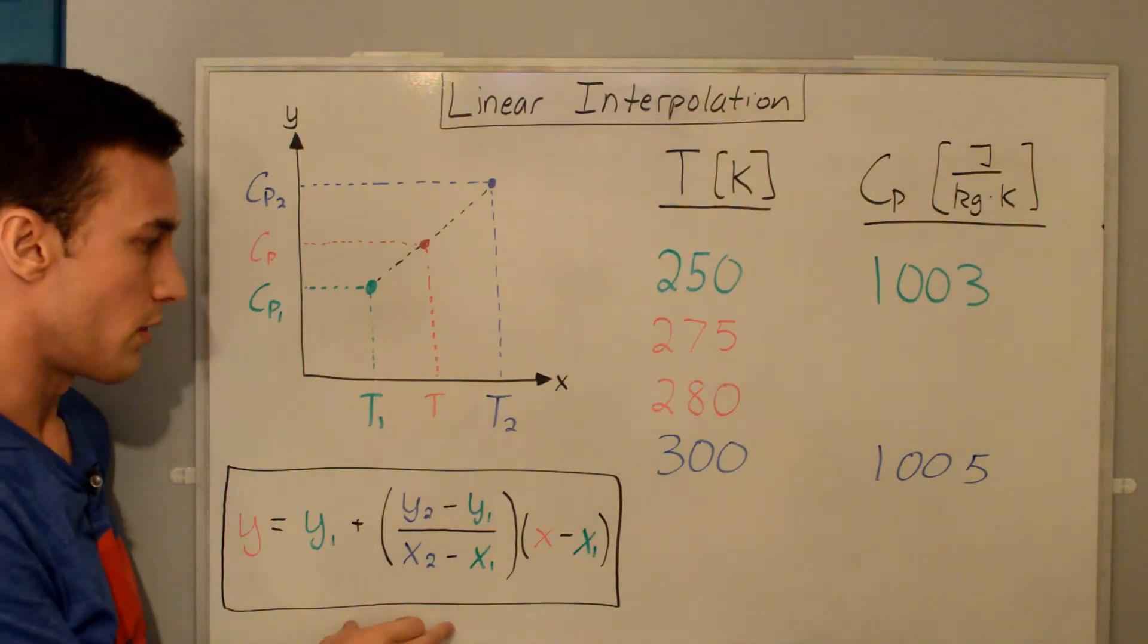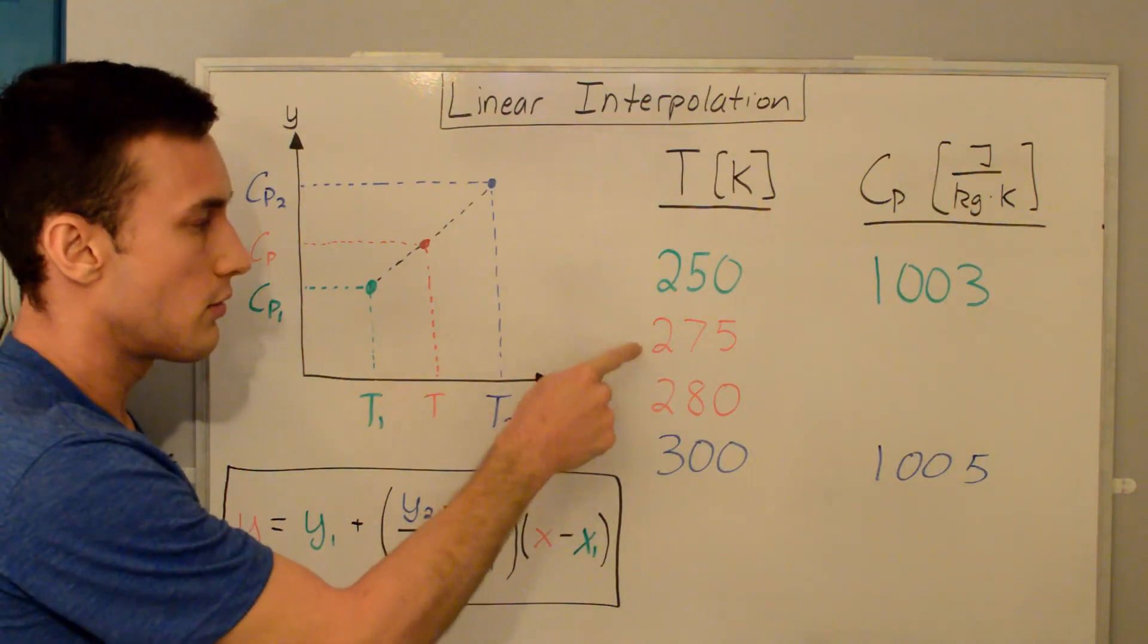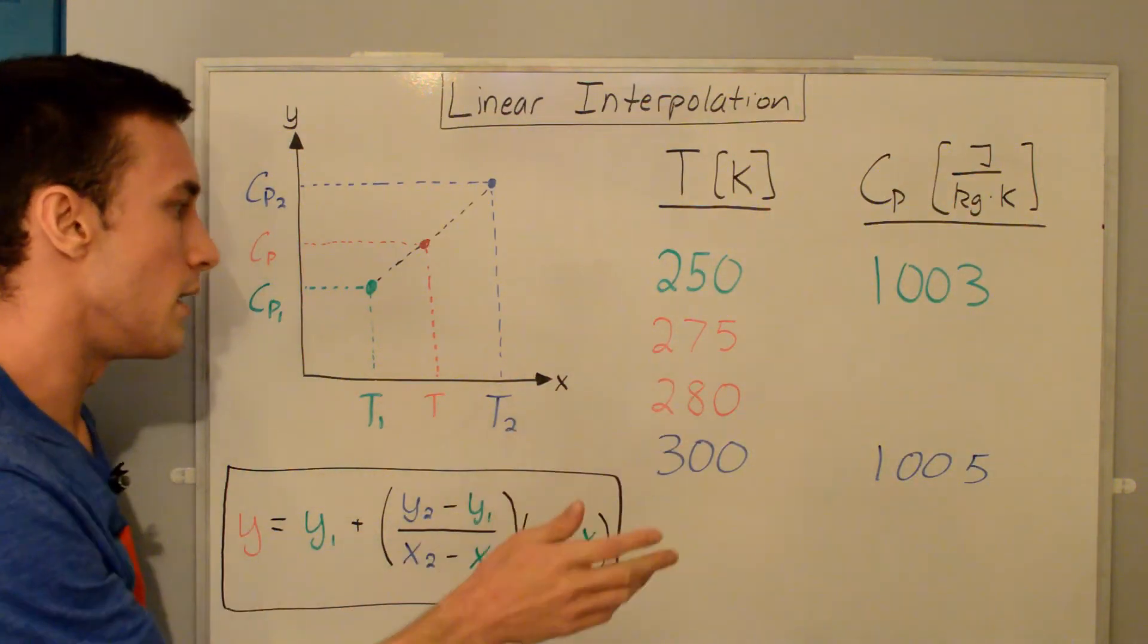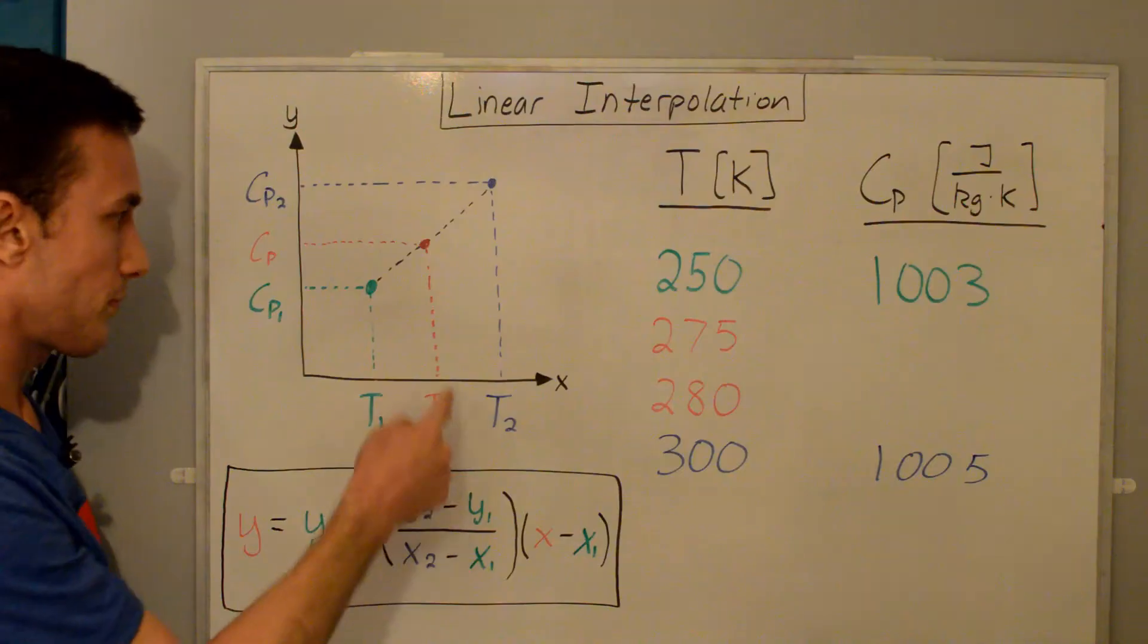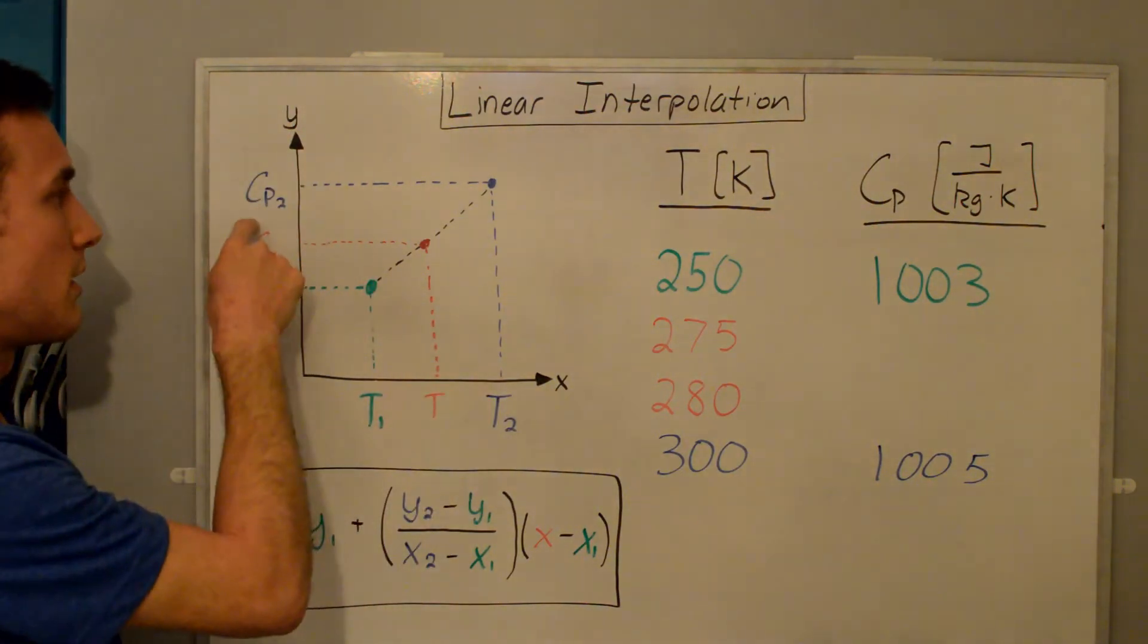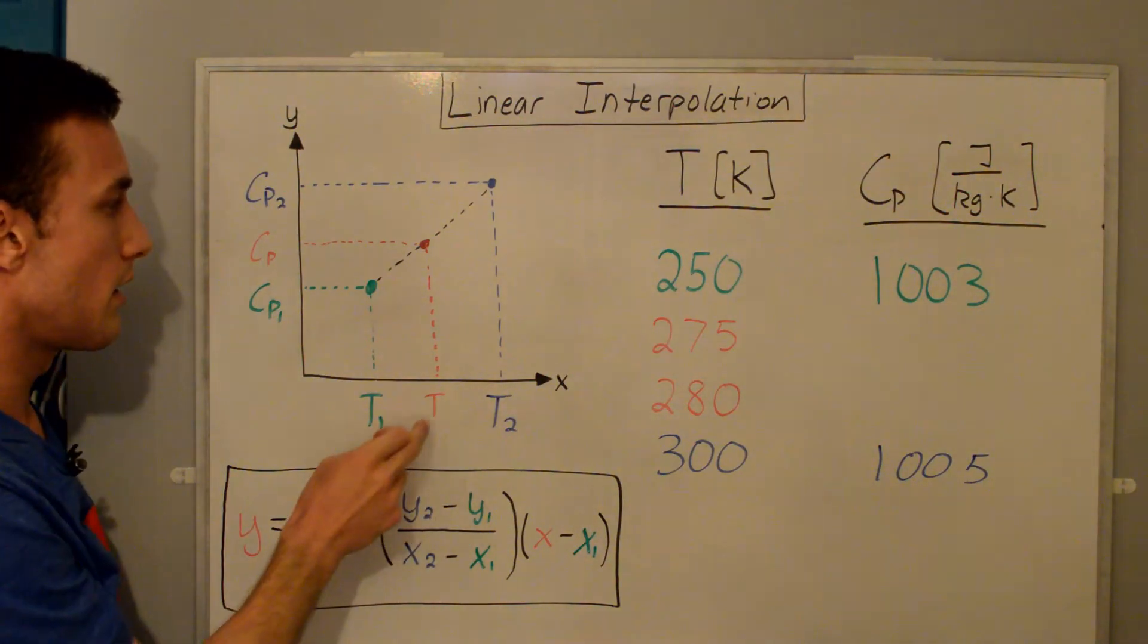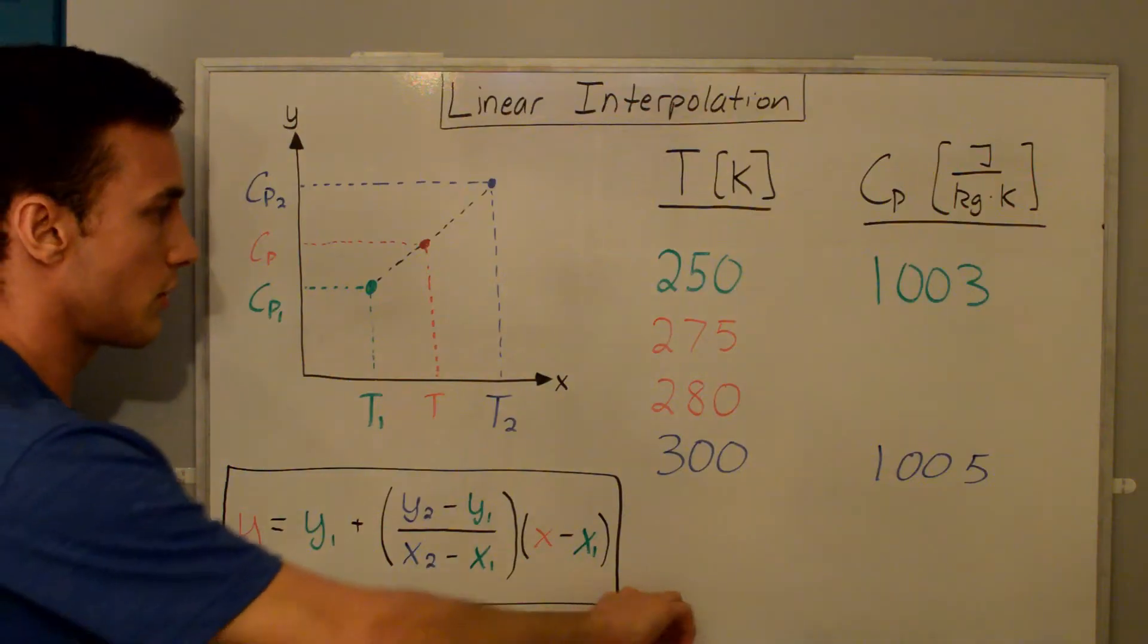Here's the equation written again. You can see that this is our known point two, known point one. I'll try to find both of these, 275 and 280. I've relabeled here, this is still the x-axis, but it's temperature now. Y-axis is the specific heat. You can see our two known points, and we're trying to find the specific heat value at this temperature.